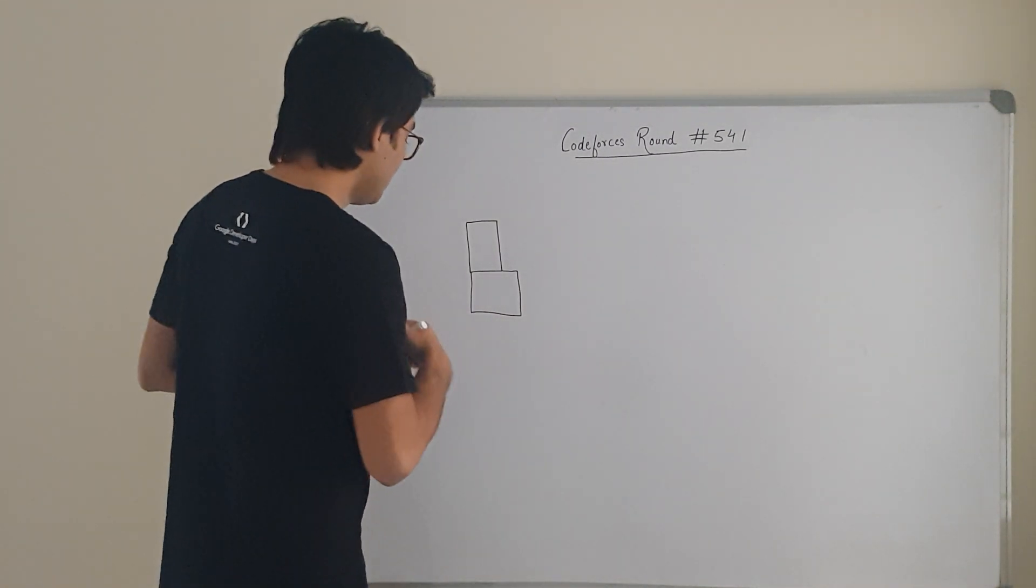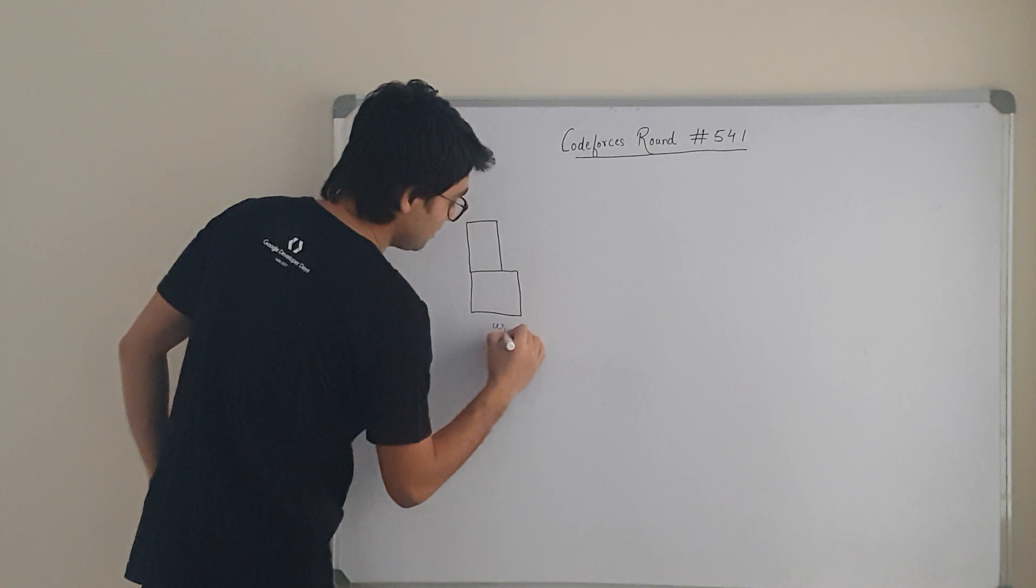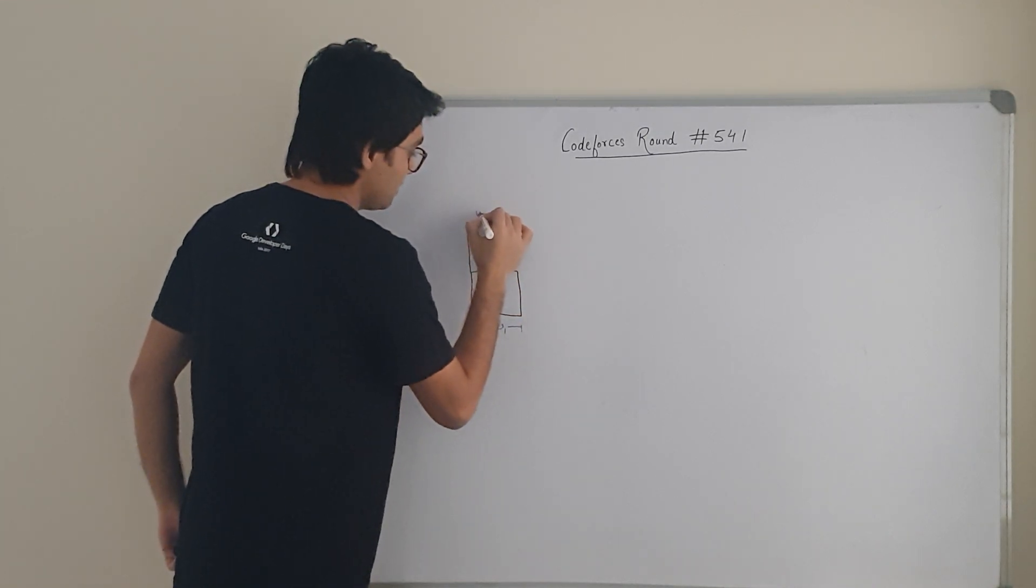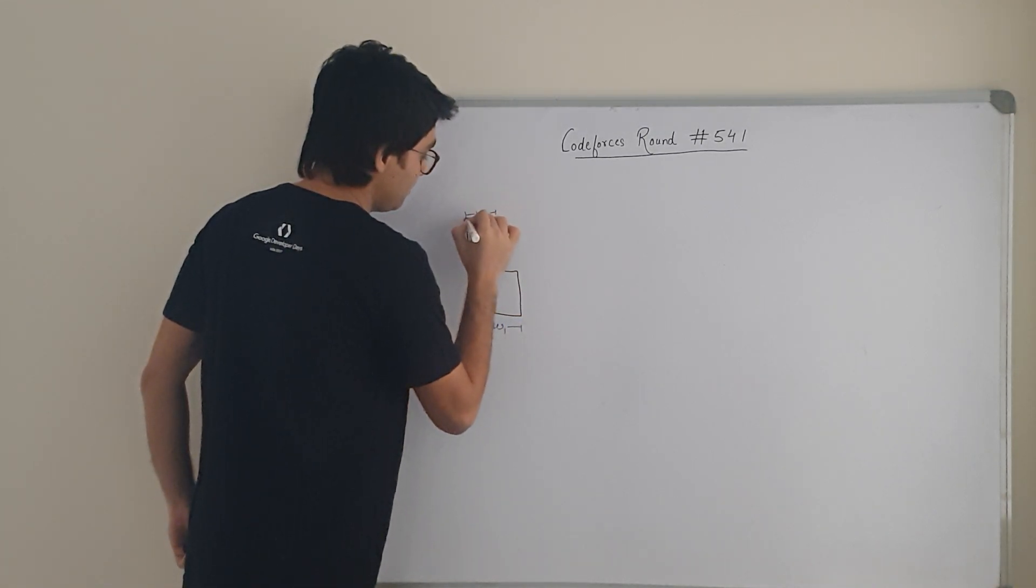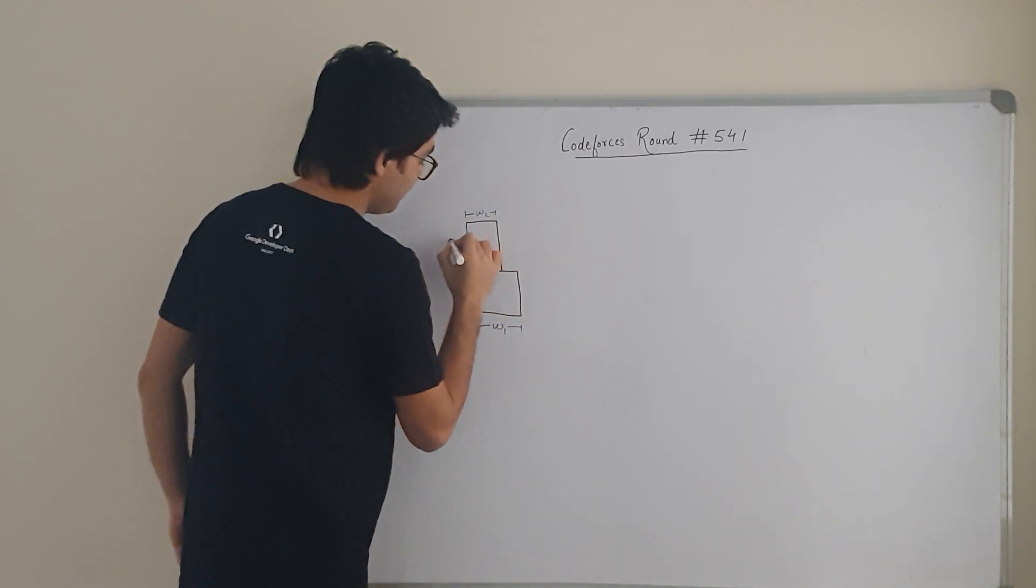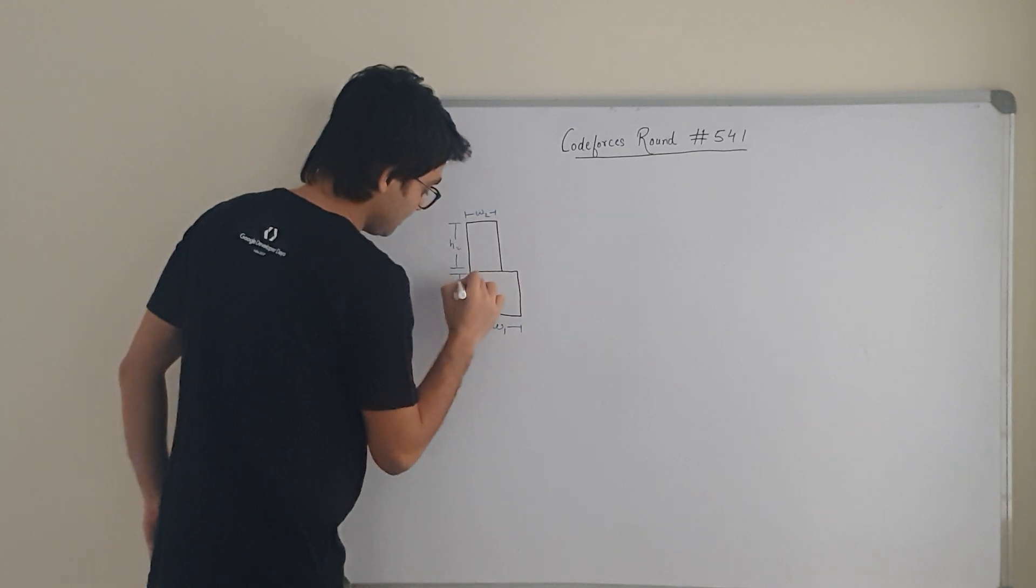We know the width of these two boxes, W1 and W2. We know the height. This one is H2 and this one is H1.